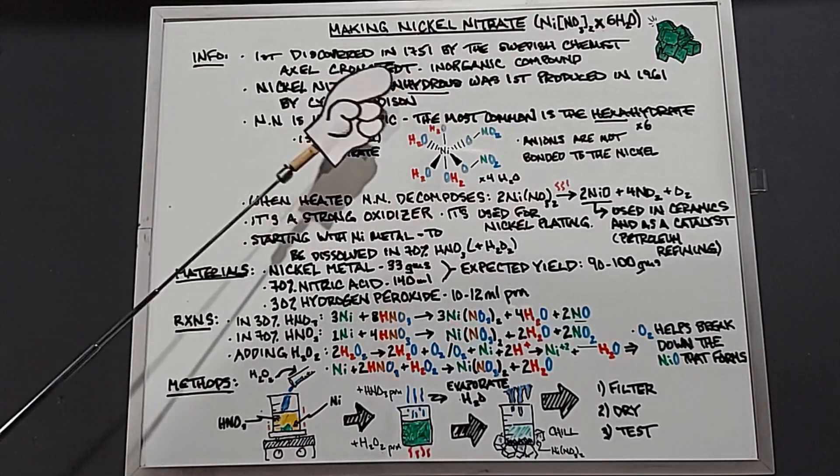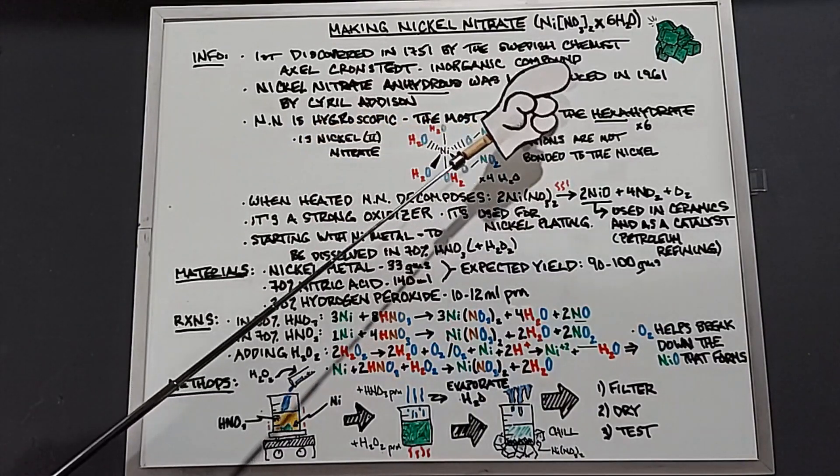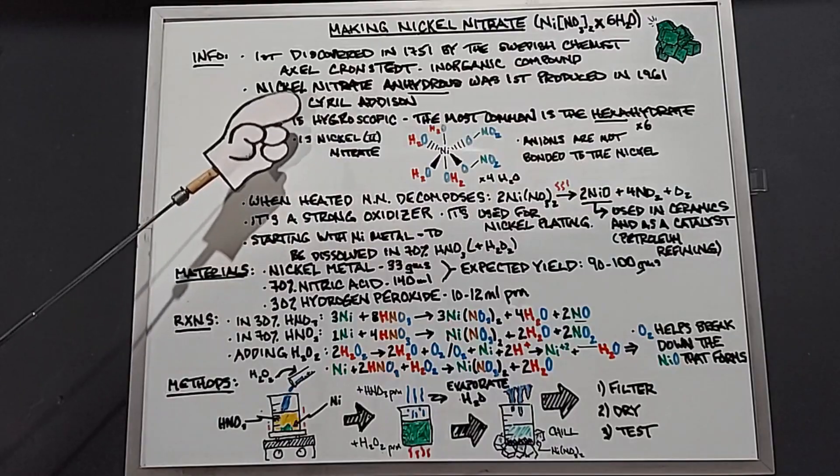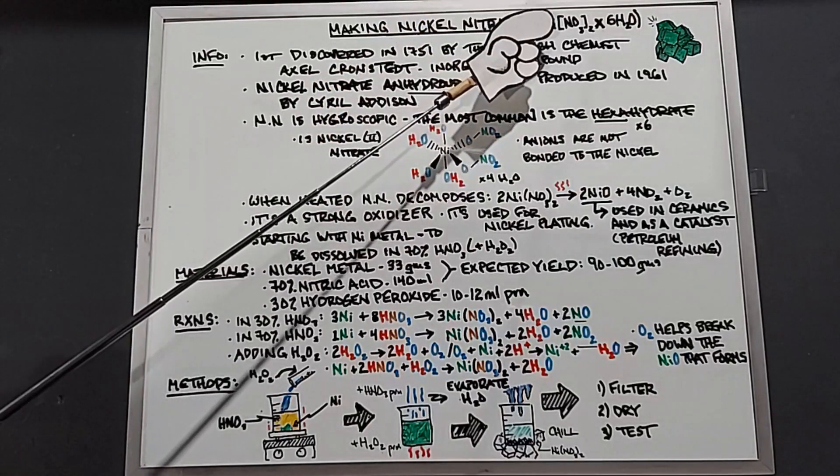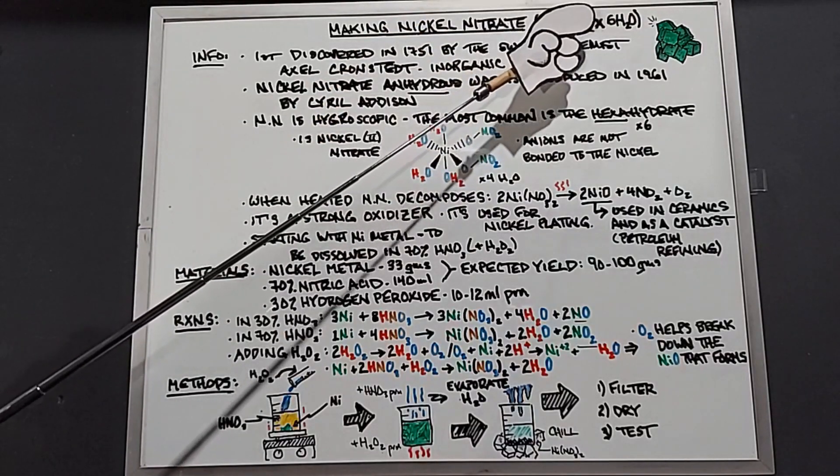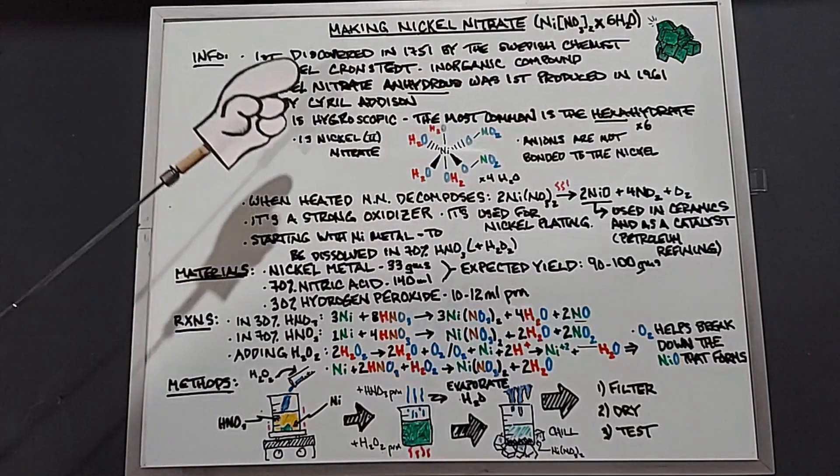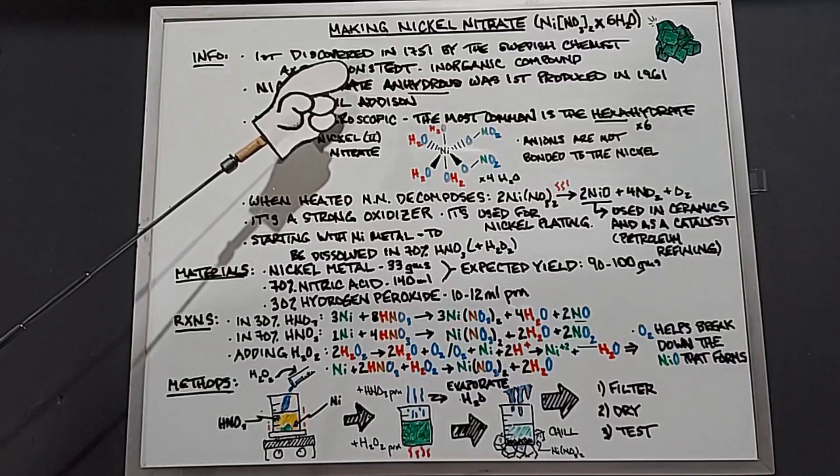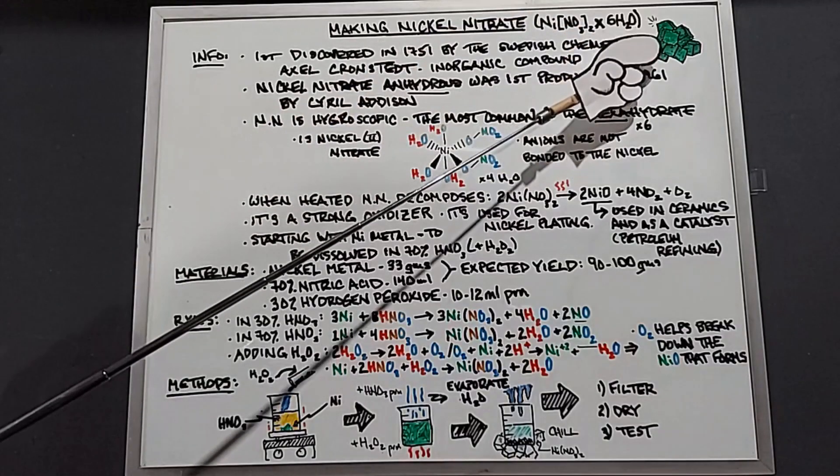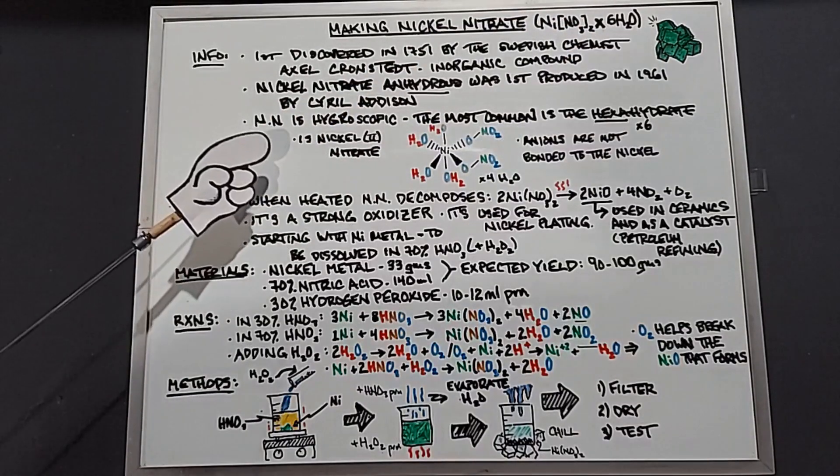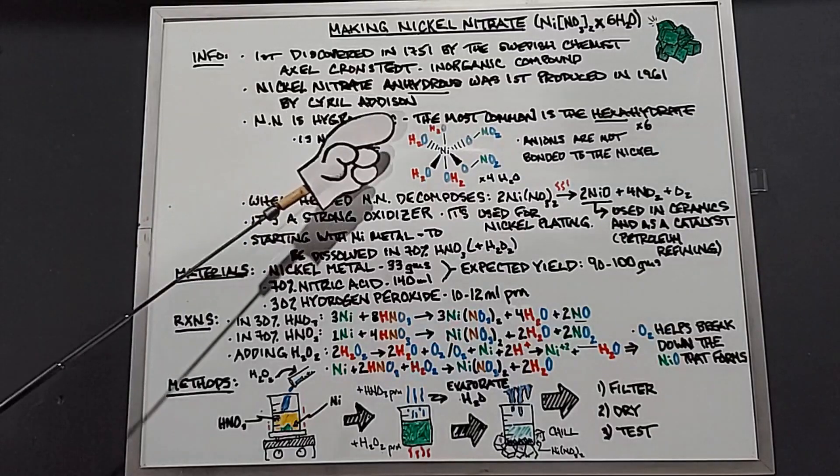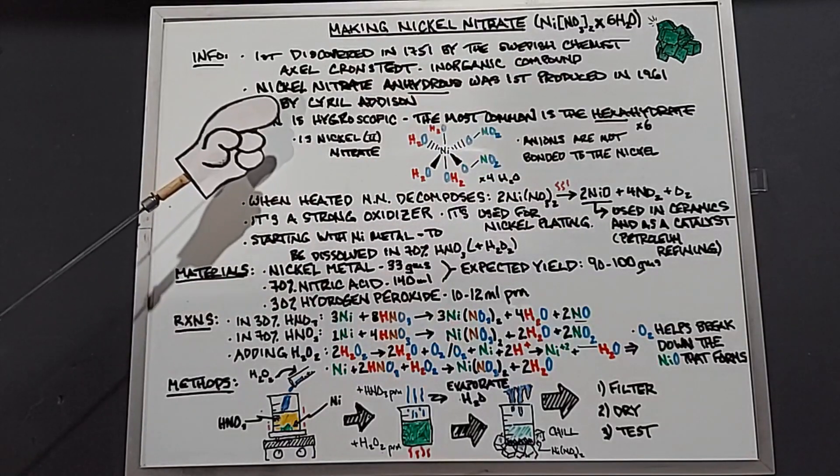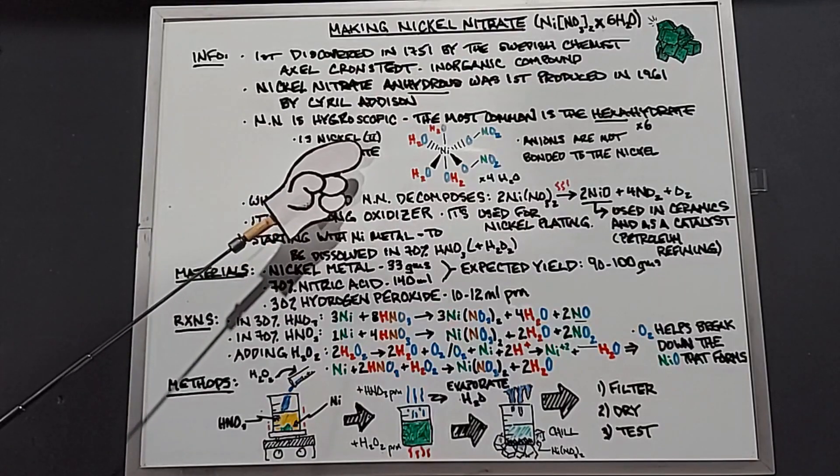It is an inorganic compound. Nickel nitrate anhydrous was first produced in 1961 by Cyril Addison. You can take the nickel nitrate hexahydrate and heat it until you drive off the waters to have the anhydrous form, but Addison produced nickel nitrate anhydrous without needing to produce the hexahydrate form first. Nickel nitrate is hygroscopic, and the hexahydrate is the most common form.